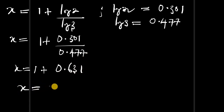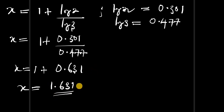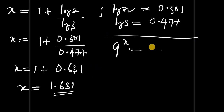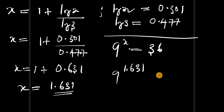Finally, x = 1 + 0.631 = 1.631. To verify, substituting back: 9 to the power of 1.631 gives 36, confirming our answer.